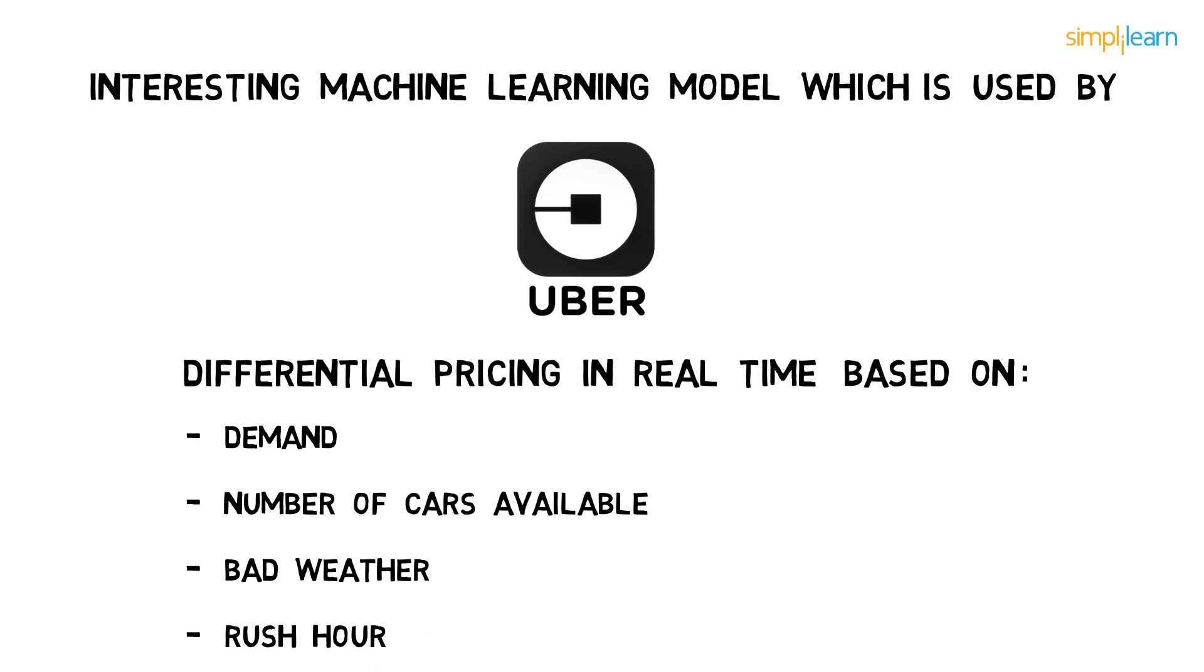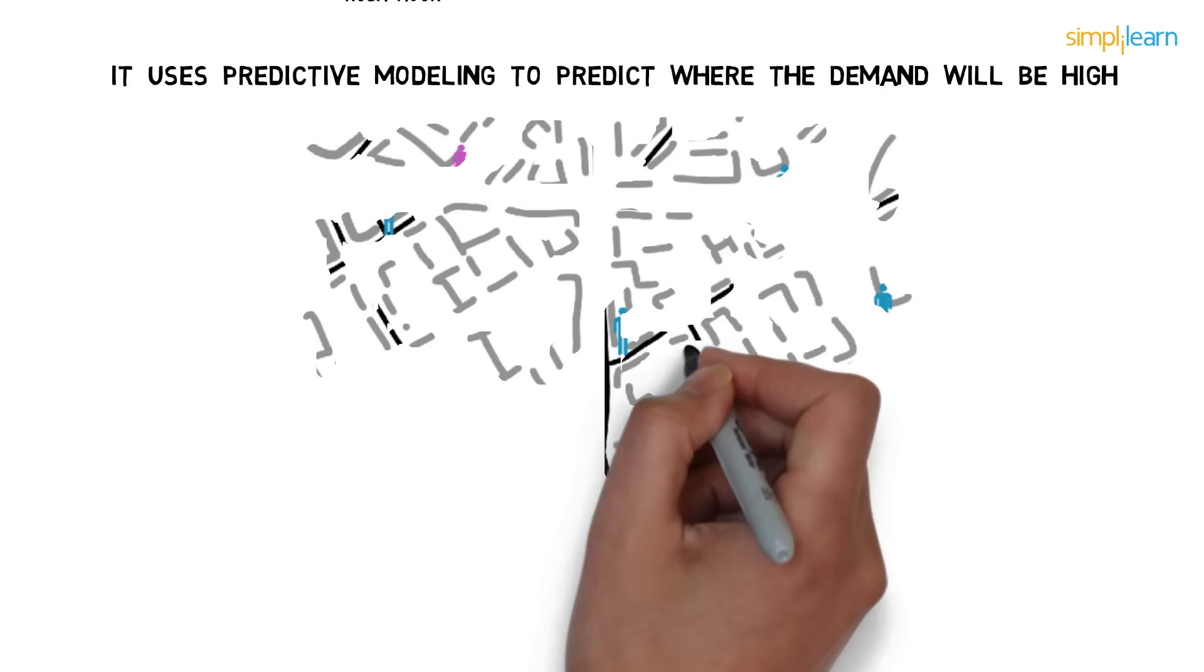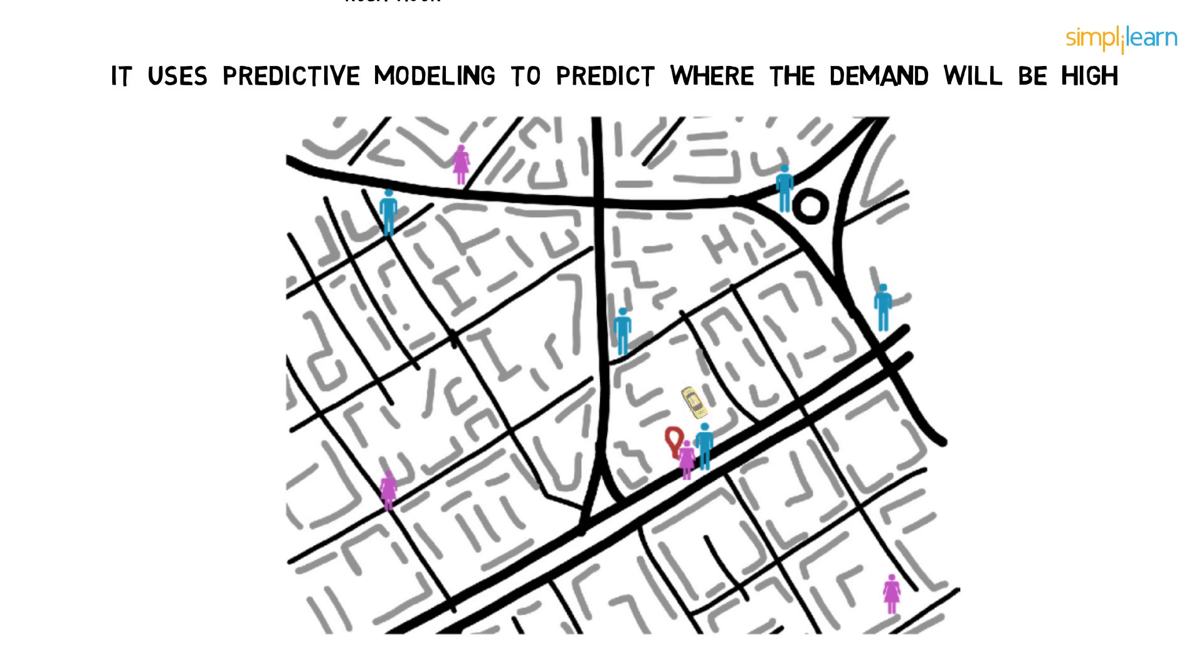Well, that's an interesting machine learning model, which is used by global taxi giant Uber and others, where they have differential pricing in real time based on demand, the number of cars available, bad weather, rush hour, etc. So they use the surge pricing model to ensure that those who need a cab can get one. Also, it uses predictive modeling to predict where the demand will be high, with the goal that drivers can take care of the demand and surge pricing can be minimized. Great!